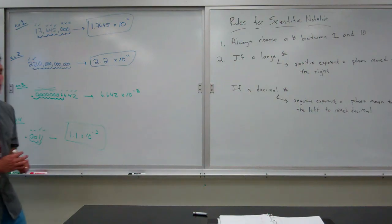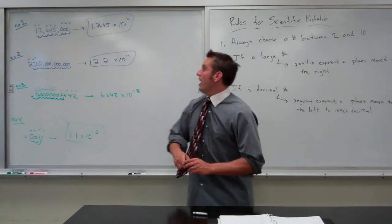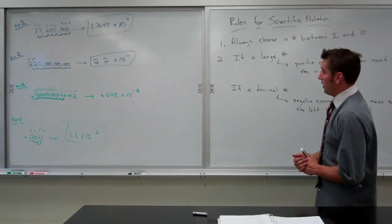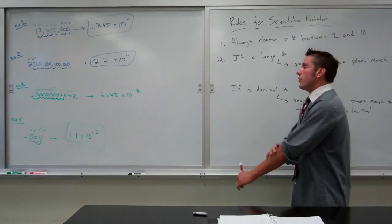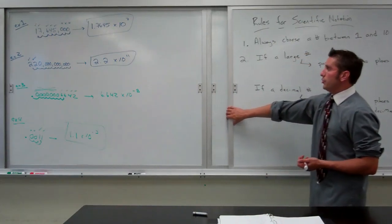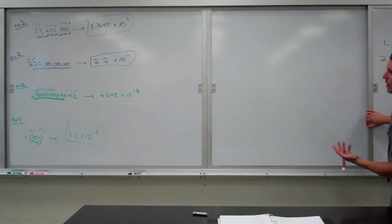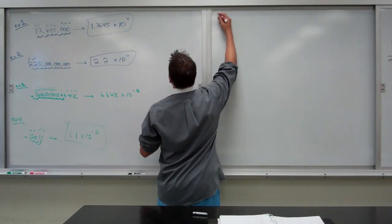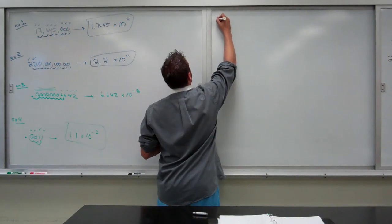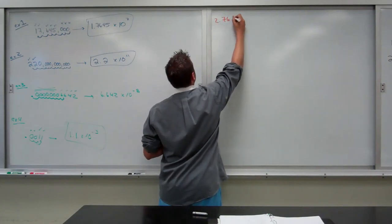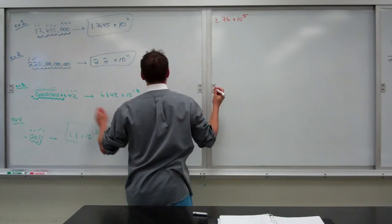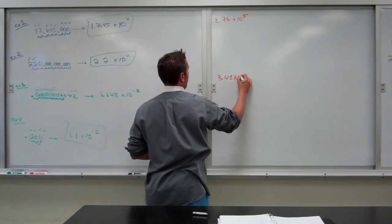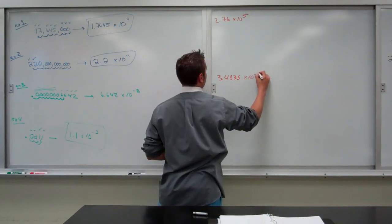So, that's how it works if you're trying to take a number that is not in scientific notation and put it in scientific notation. If I'm trying to do the reverse, all we do is look at what we have. For instance, I'll just take one of each of these and try to convert it back. Let's say I have the number 2.76 times 10 to the fifth and 3.4835 times 10 to the negative sixth.